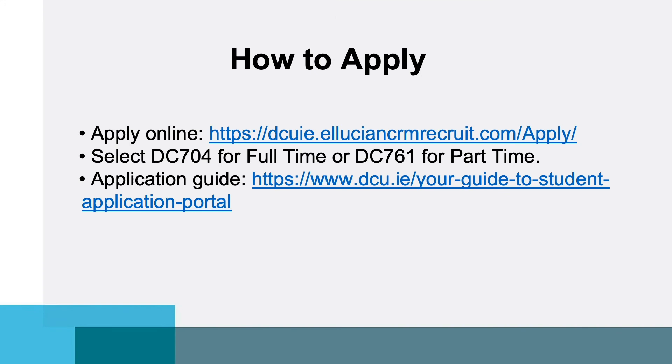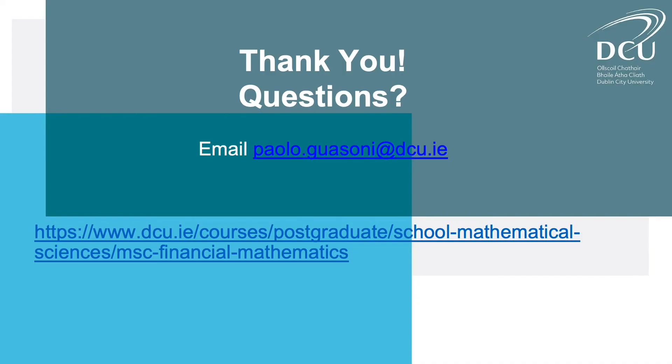To apply, visit the CRM Recruit website of DCU. Use code DC704 for the full-time option and DC761 for the part-time option. An application guide on the same website explains the full step-by-step process. If you have any questions, feel free to send an email. Take care.